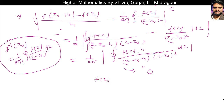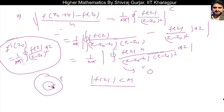Since f(z) is defined on the domain, it will have some maximum value M in its modulus. We take a small circle gamma of radius r centered at z-naught such that z-naught plus h is also inside it, assuming h is less than r/2. So both z-naught and z-naught plus h lie within this small circle. Using the triangle inequality, modulus of (z minus z-naught) minus h, which means modulus z1 minus z2 is always greater than modulus z1 minus modulus z2.